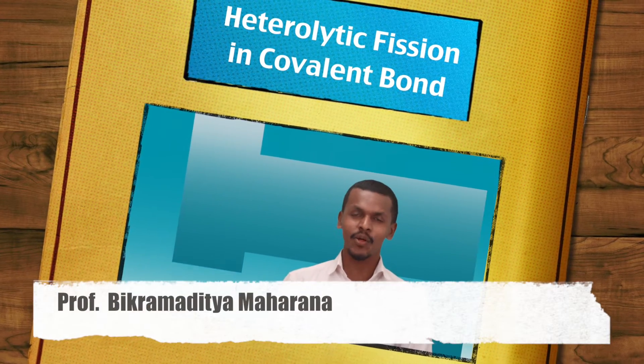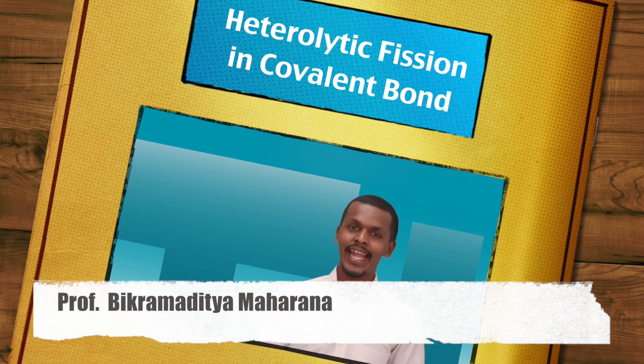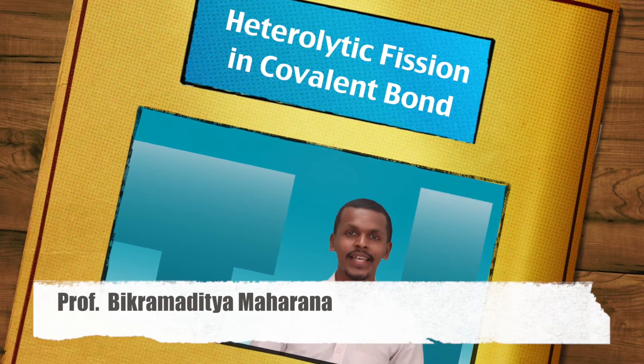Chapter: Some Basic Principles and Techniques in Organic Chemistry. We are doing the topic heterolytic fission in covalent bonds. In the last lecture we studied homolytic fission or homolysis, and now we are going to do a topic based on heterolytic fission. So what is heterolytic fission? We'll take an example to make you understand what is actually heterolytic fission, or what we could call heterolysis.